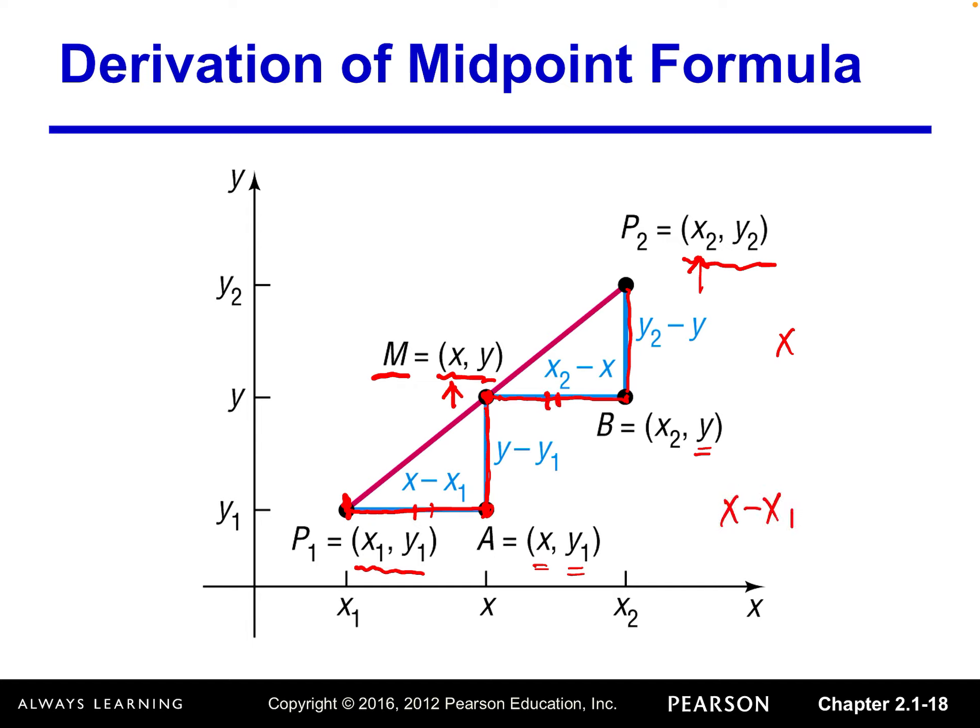And then the length of this side M to B, that should be X2 minus X. And then these two lengths should equal. And then we solve this linear equation.